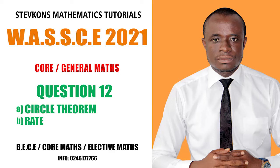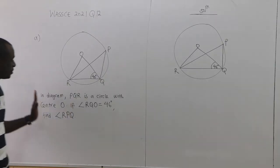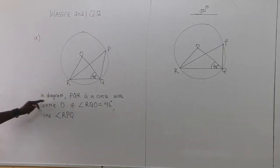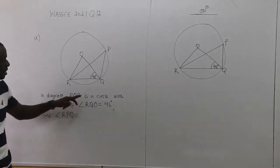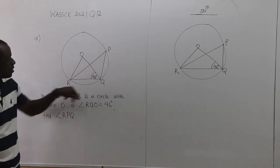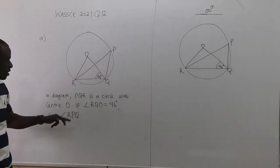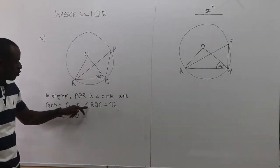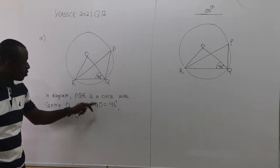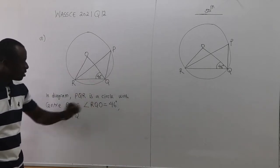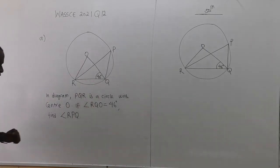Let's consider this example. This is WASI 2021, question number 12, part A — a circle theorem question. The diagram shows PQR is a circle with center O. Angle RQO is 46 degrees.